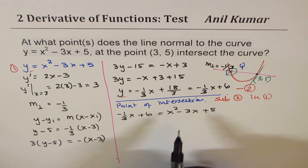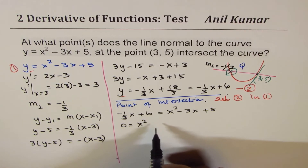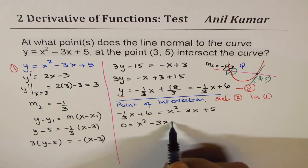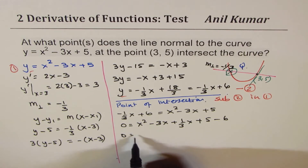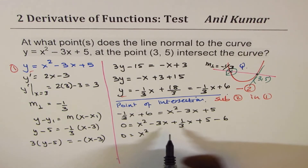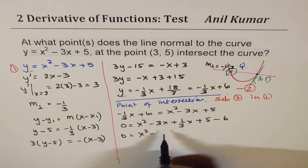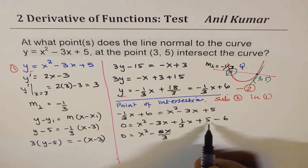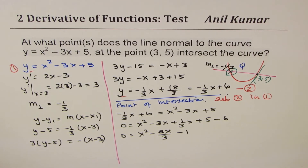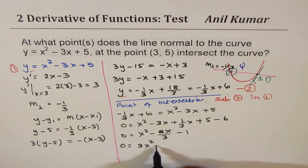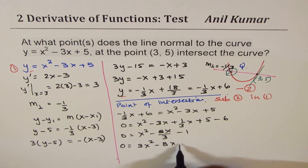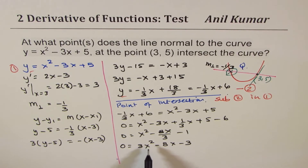Bringing all terms together: 0 = x² - 3x + x/3 + 5 - 6. Combining the x-terms gives -8x/3, and the constant gives -1. So: 0 = x² - 8x/3 - 1. Multiplying through by 3: 0 = 3x² - 8x - 3.